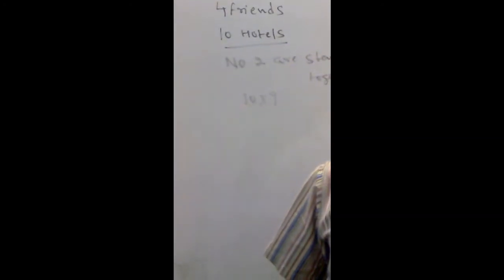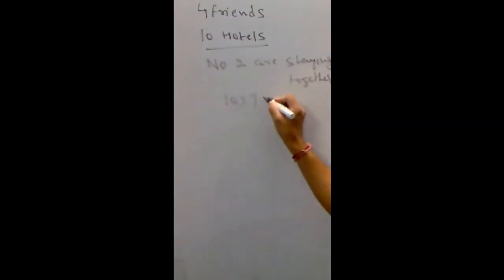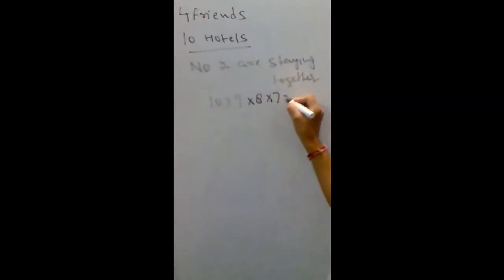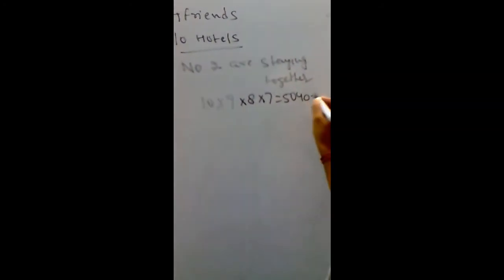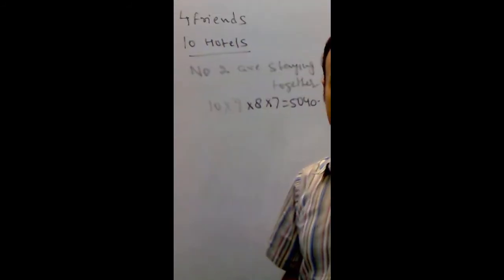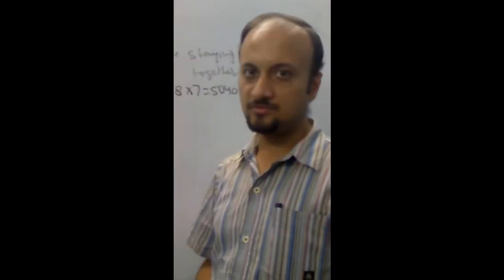Corresponding to these ninety ways, the third friend can stay in how many ways? Eight ways. Similarly, four can stay in how many ways? Seven ways. Then what? Five zero four zero. So, total number of ways these friends can stay is 5040.